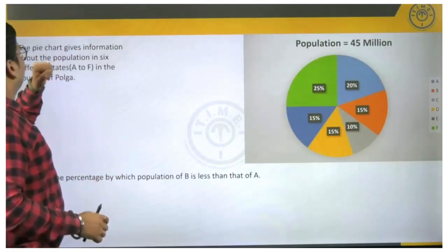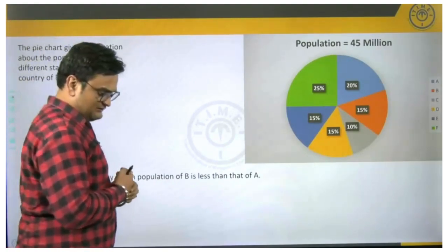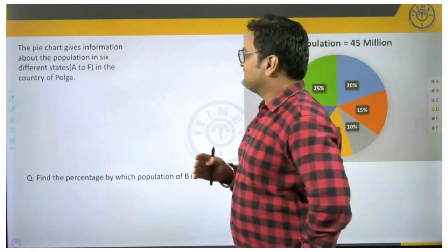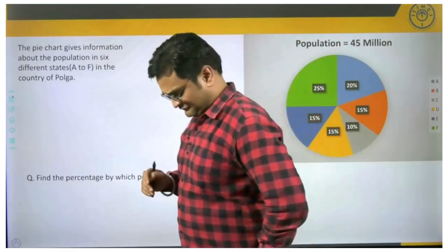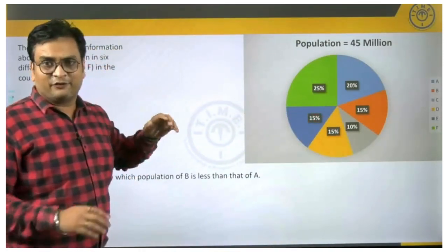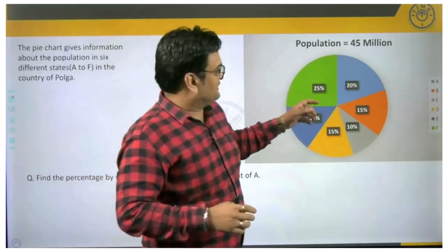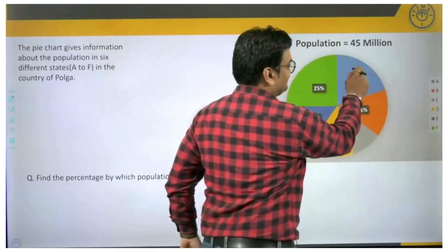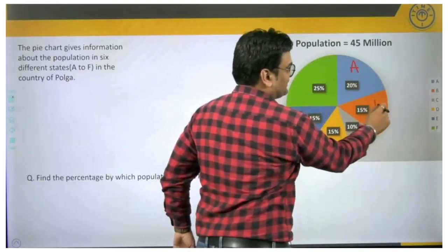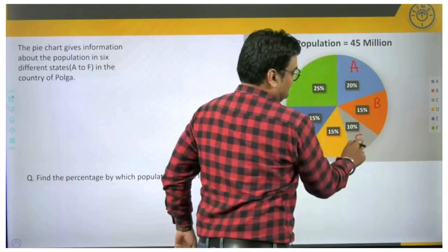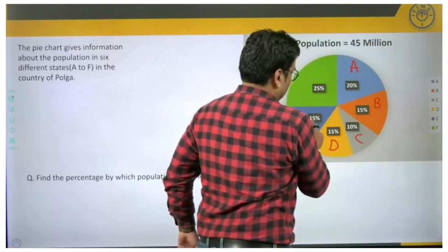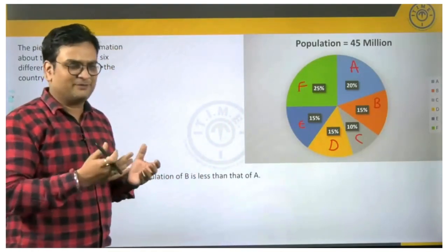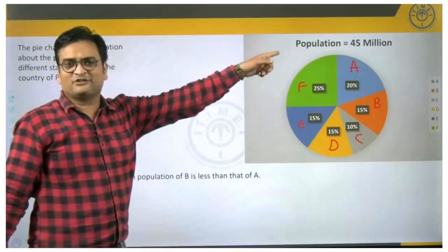The pie chart gives information about the population in 6 different states — A to F — in the country of Polga. Looking at the pie chart, the values associated with A, B, C, D, E, and F are clearly indicated. The total population is also given as 45 million.